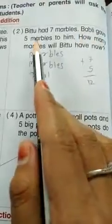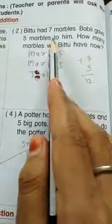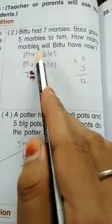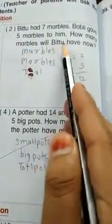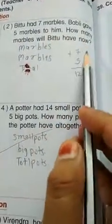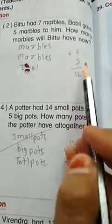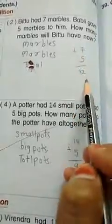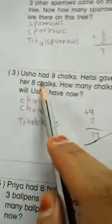Bitu had 7 marbles. Bubbly gives 5 marbles to him. How many marbles will Bitu have now? 7 plus 5 equals 12 marbles.